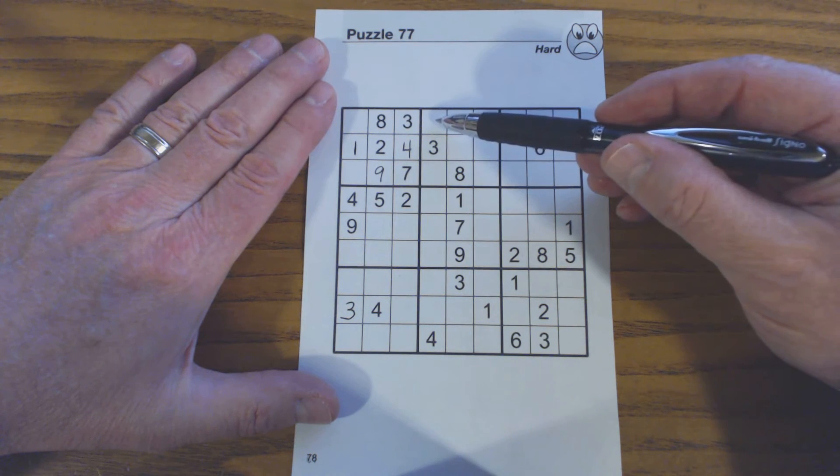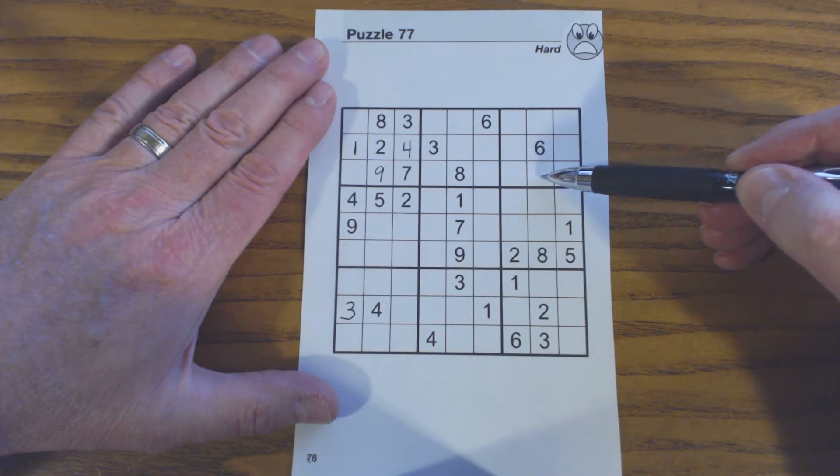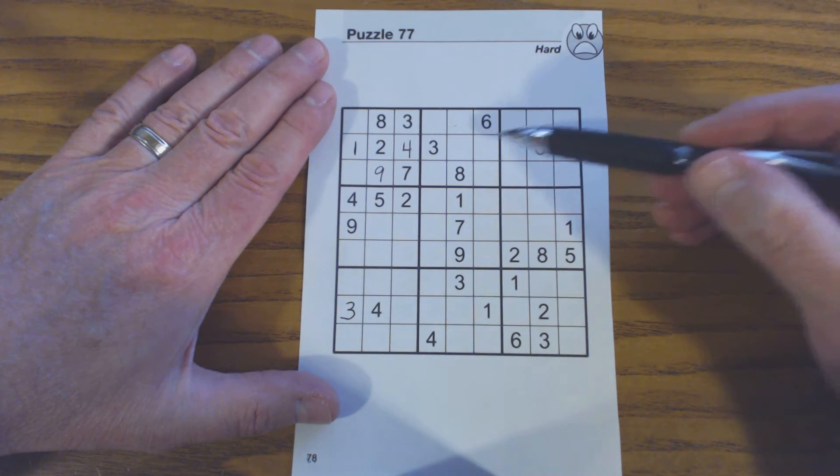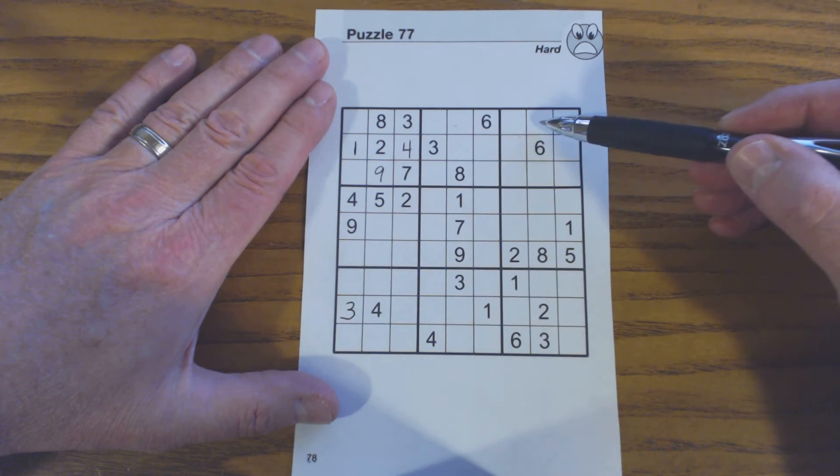Therefore if there's a one here in row one in this square, then in this square the one has to be in row three. Conversely if there's a one in row three in this square, the one has to be in row one in this square.